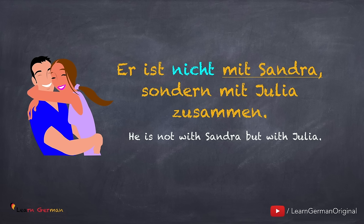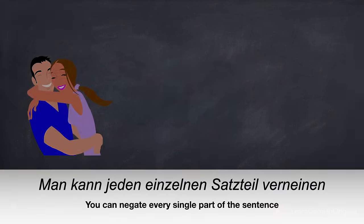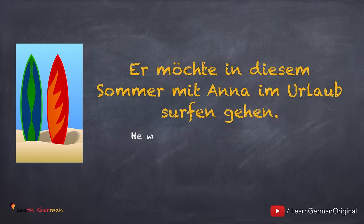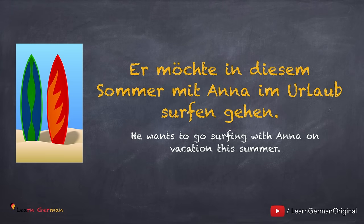The underlined words were negated; NICHT was always placed before them, and these words were also emphasized. Man kann jeden einzelnen Satzteil verneinen, in dem NICHT direkt davor steht. Diese Satzteile werden betont. Hier ist ein Beispiel: Er möchte in diesem Sommer mit Anna im Urlaub surfen gehen. In diesem Satz sind viele Elemente: er, in diesem Sommer, mit Anna, im Urlaub, surfen, und gehen. Wir sehen jetzt, wie wir diese Teile negieren können.